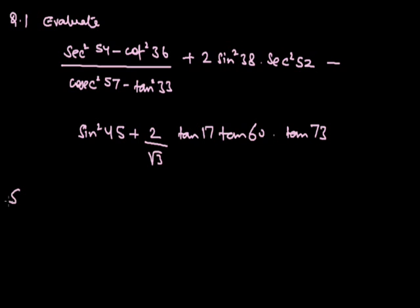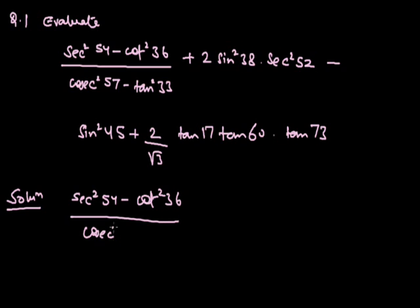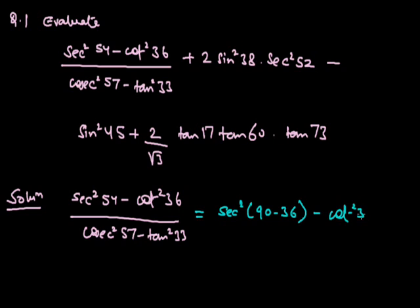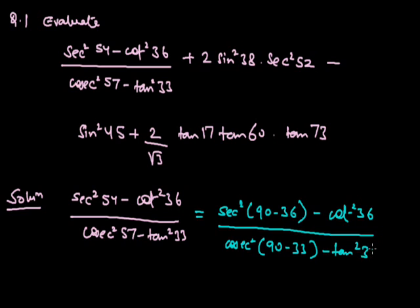The first question is: evaluate (sec²54 - cot²36) / (cosec²57 - tan²33) + 2sin²38 · sec²52 - sin²45 + (2/√3) · tan17 · tan60 · tan73. We will solve this one by one. First we will solve the first part, that is (sec²54 - cot²36) / (cosec²57 - tan²33).